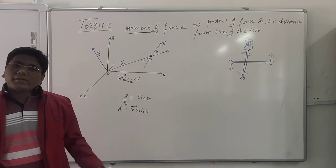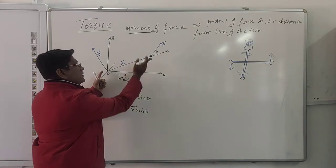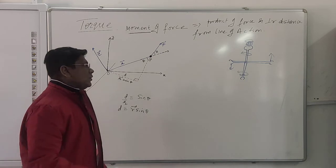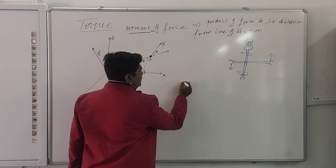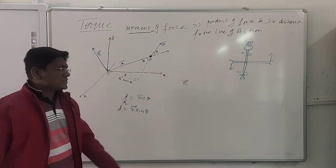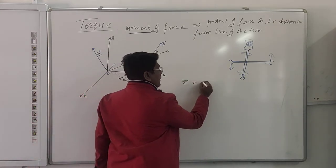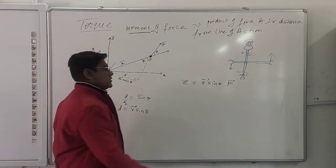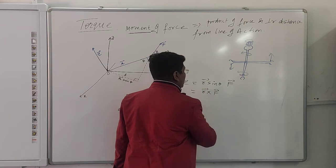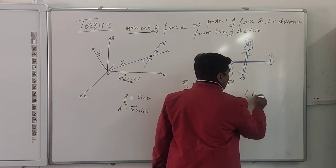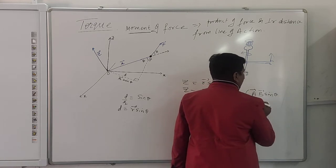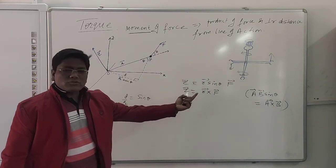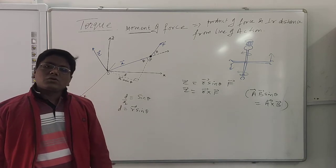The perpendicular distance from the line of action is r times sine theta. So the formula is: tau equals r sine theta times F, the vector force applied. I can write this as r cross F. This is because AB sine theta can be written as A cross B. Similarly, r sine theta times F is written as r cross F. So tau equals r cross F.